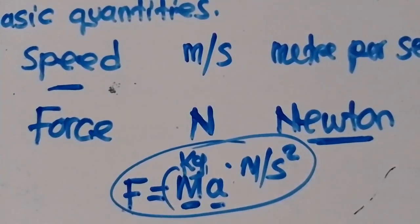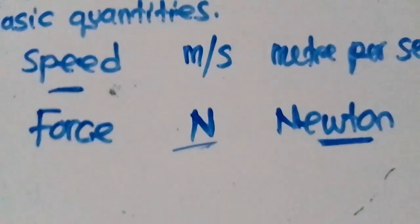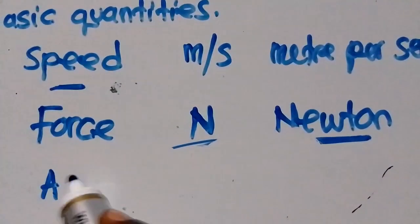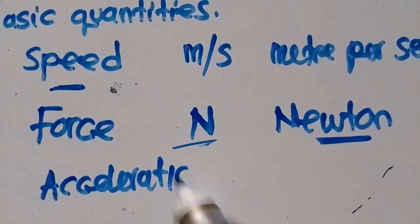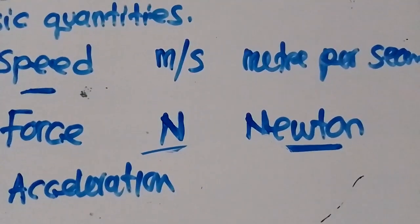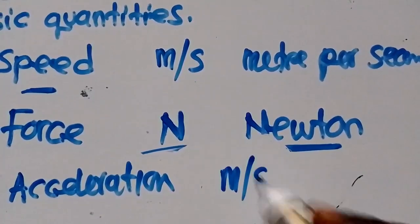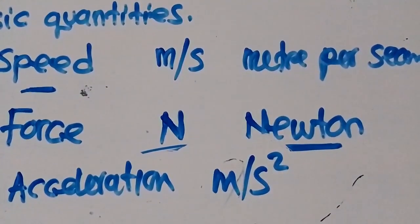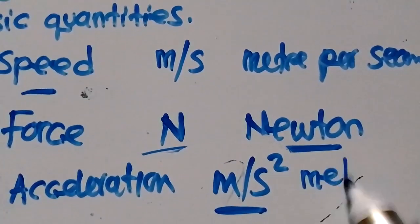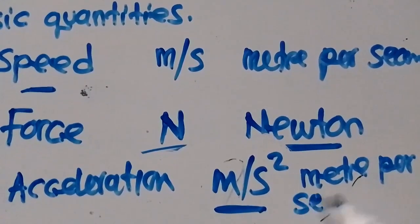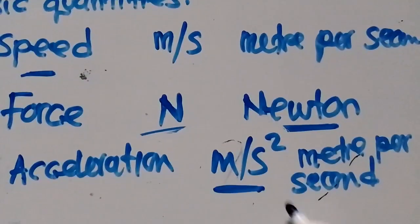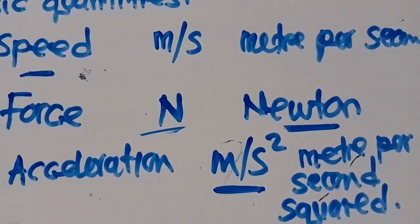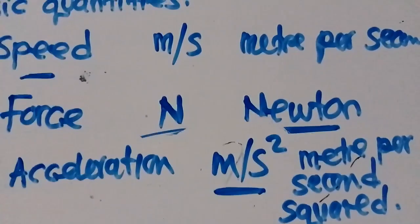Acceleration itself is also a derived quantity. The unit for acceleration is meters per second squared. In words: meters per second squared. These are some of the things that we need to know and understand. We need to make sure we know all these things and get the necessary concepts.